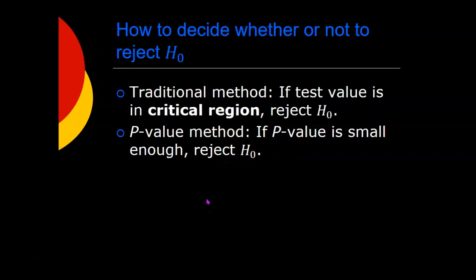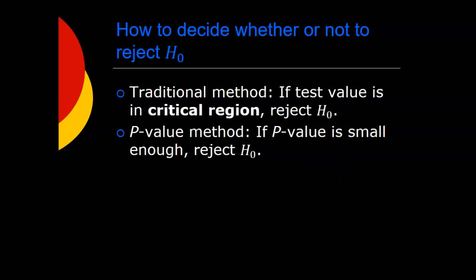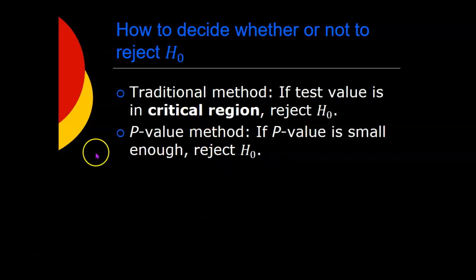There are two different methods that can be used to base this decision on: the traditional method and the p-value method. The traditional method works by calculating a test value and looking at where that test value falls in relation to the standard normal curve or some other curve — if it's in the critical region, you reject the null hypothesis. Nowadays it's more common to use the p-value method, where you come up with a p-value, and if it's small enough, you reject the null hypothesis.